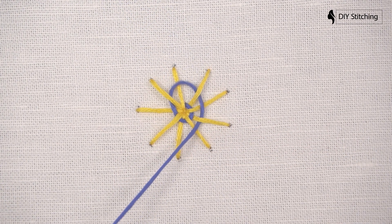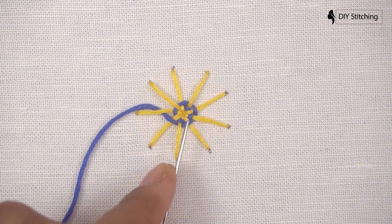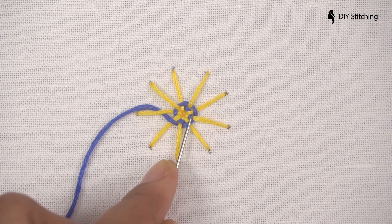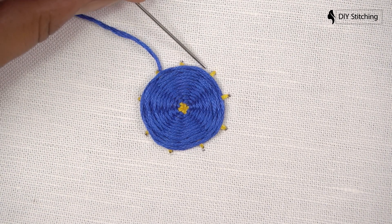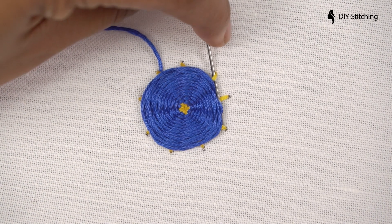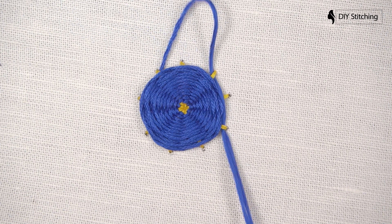You can see here why it's important to use an odd number of threads, because the over and under alternate on every spoke. And if you're using an even number of spokes, that won't happen.